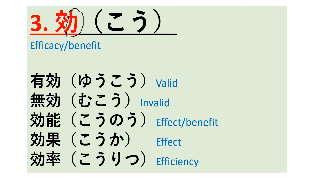The examples are: number one, yuko, meaning valid; number two, muko, meaning invalid; number three, kono, meaning effect or benefit; number four, koka, meaning effect; number five, koritsu, meaning efficiency. All these words are related to strength, giving the ideas of benefit, efficiency, validity, and invalidity. By remembering this radical attached to 'ko,' we can memorize this kanji.